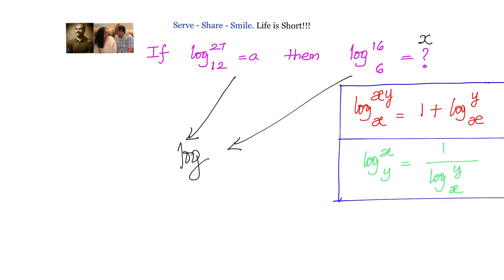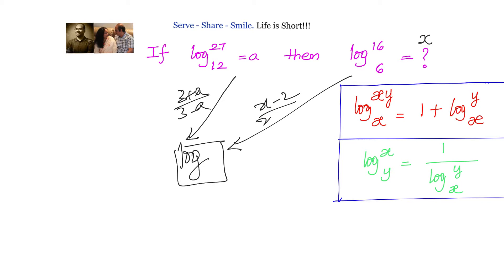When we reduce both expressions to this common logarithm, the given value will become something like 3 plus a by 3 minus a, and the unknown x will become x minus 2 by 2 plus x. Then we can equate both and find x.